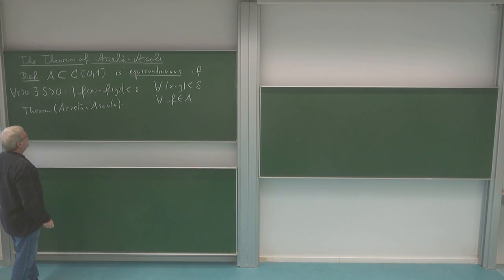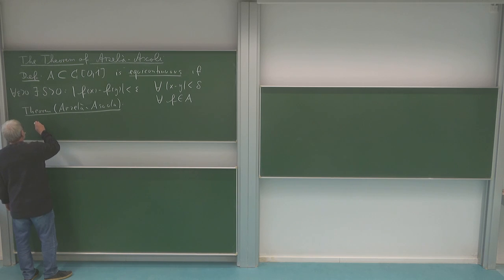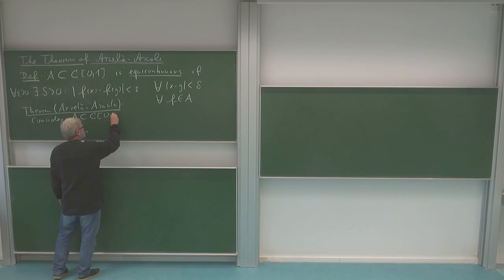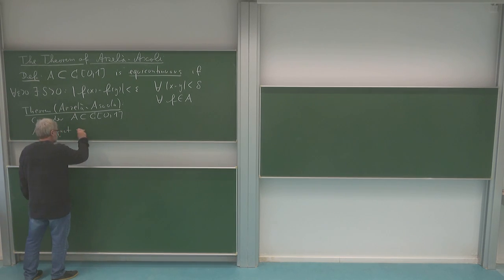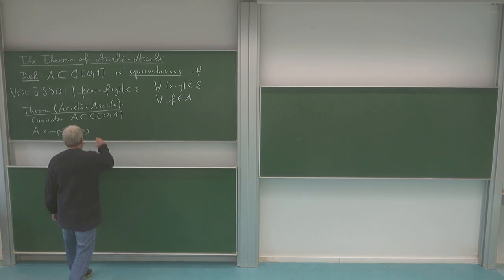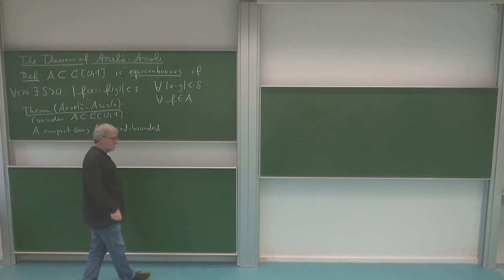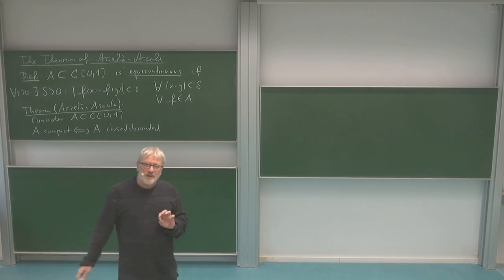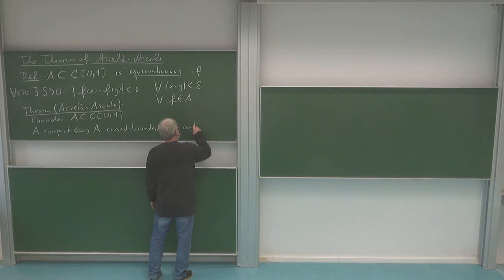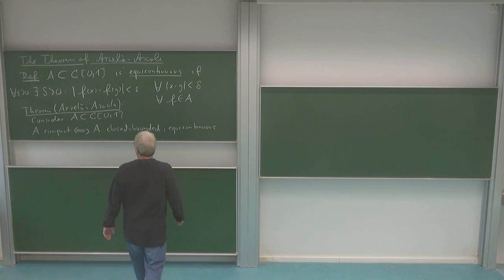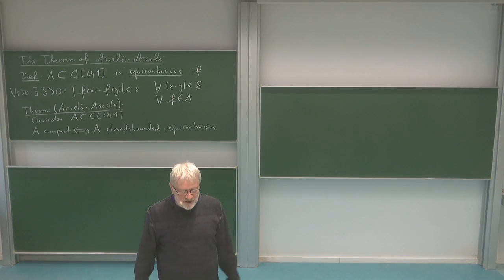The Arzelà-Ascoli theorem says: consider a subset A of the continuous functions on the interval [0,1]. Then the compactness of this set is exactly the fact that A is closed and bounded — that's what we always need — but in infinite dimensions there must be something more, and here for this Banach space we can say exactly what that something more is: namely, the set must also be equicontinuous. And that's the main theorem of this lecture, which we have to prove.